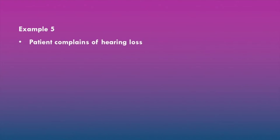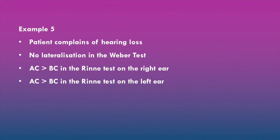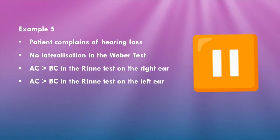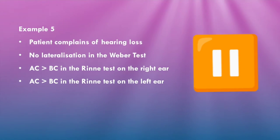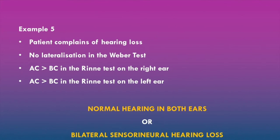In example five, we have a patient who complains of hearing loss. There is no lateralization in the Weber test. Air conduction is greater than bone conduction in the Rinne test on both the right and left ears. The likely diagnosis is either normal hearing in both ears or bilateral sensorineural hearing loss. Most patients with these examination findings will have normal hearing in both ears.